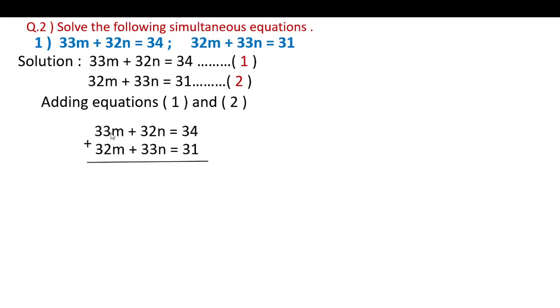Adding equations 1 and 2: 65m plus 65n equals 65. Dividing by 65 gives us m plus n equals 1, which is equation 3.